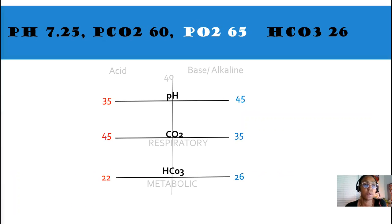Here's our first pH. 7.25. CO2 is 62. Oxygen is 65. And our bicarb is 26. Let's plot the numbers. We have our pH off the line on the acid side. CO2 is 60 also on the acid side. And then our third player, bicarb, is at 26 on the line. It's working. It's on the tail end of the range.